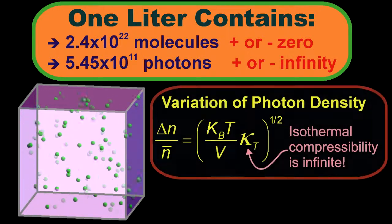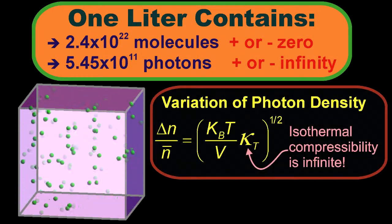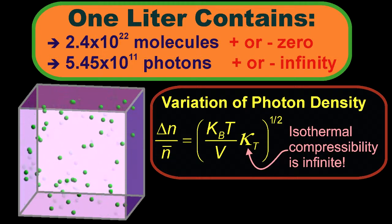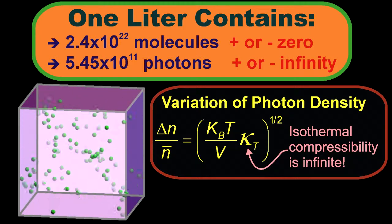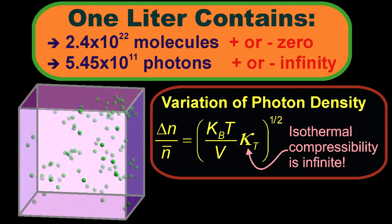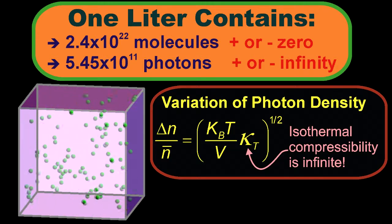Here's the variance formula that you can find in statistical mechanics books. For a photon gas, the last term is infinite. The problem happens because photons are not conserved and low-frequency photons have very low energy.